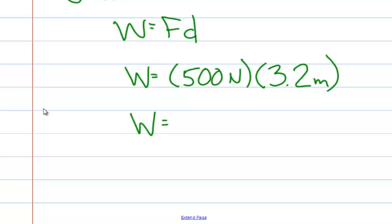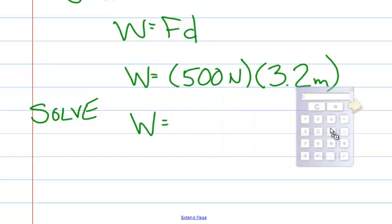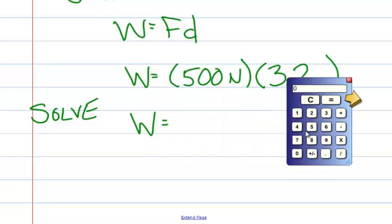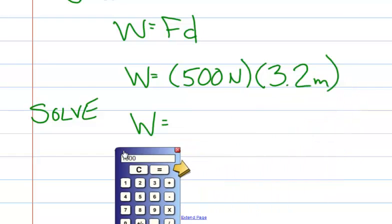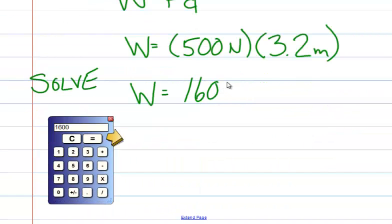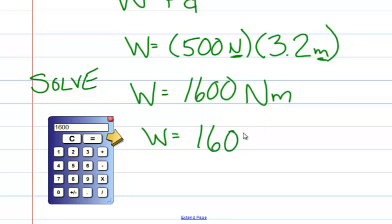As we do our calculations, we're now at the solve step. Using a calculator to make our life a little bit easier, we have 500 times 3.2, and our answer would be 1,600. Now what would our unit be? We were left with newtons and meters, so our units would be newton meters. But if you looked at the video about what is a joule, you'd know that a newton meter is also known as a joule.